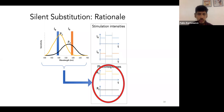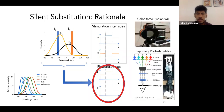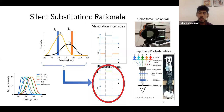We can extrapolate this to other photoreceptors, but in that case we need more primaries. We applied this technique using a ColorDome system — a conventional system with only four primaries. We then built another system called the Five Primary Photoreceptor system, which allowed us to apply silent substitution across all five photoreceptors.